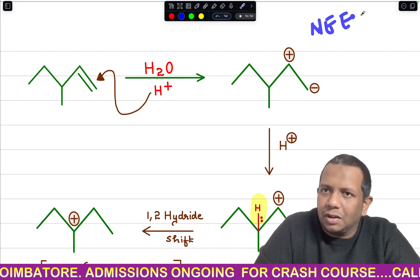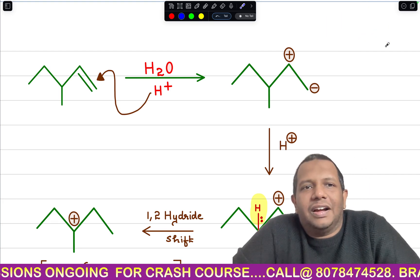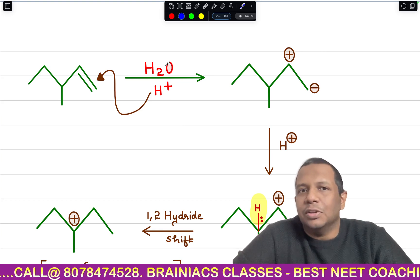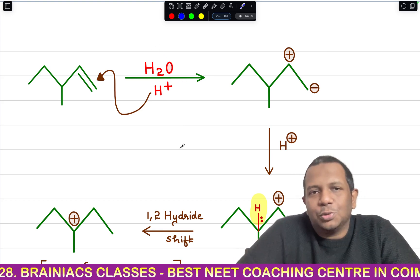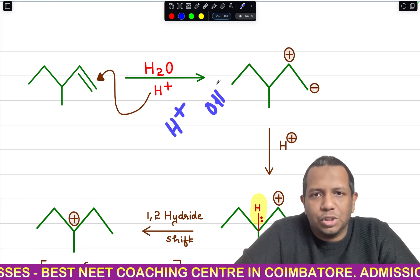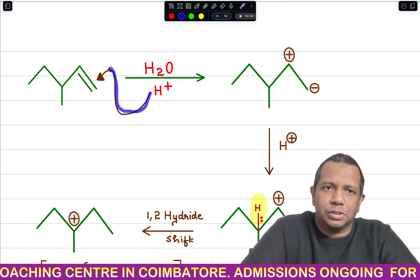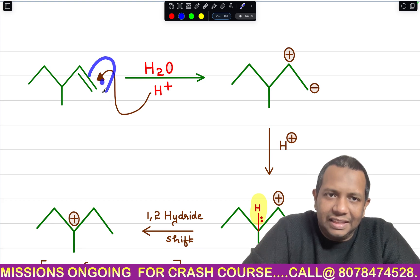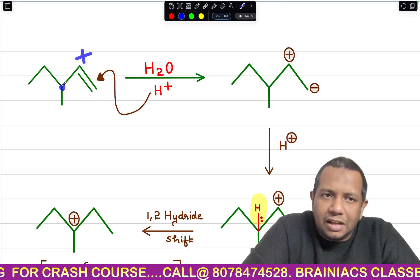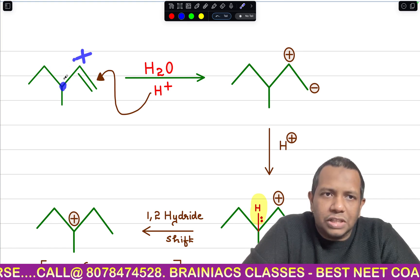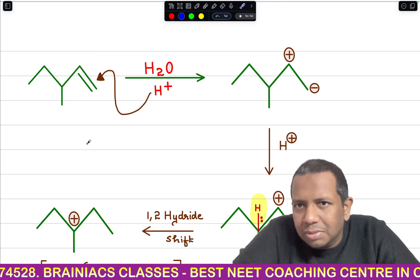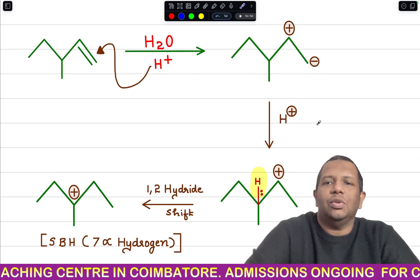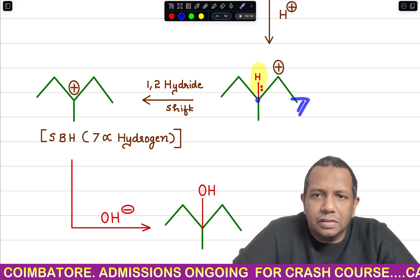Now the most important question for NEET 2024 — a similar question appeared in JEE Mains with peroxide, but here I expect Markovnikov's addition for NEET. H₂O is present; it ionizes to H⁺ and OH⁻. H⁺ approaches the π bond, which undergoes polarization. Polarizing in this direction means the positive charge here can migrate to give a tertiary carbocation, so the polarization is done in that direction.